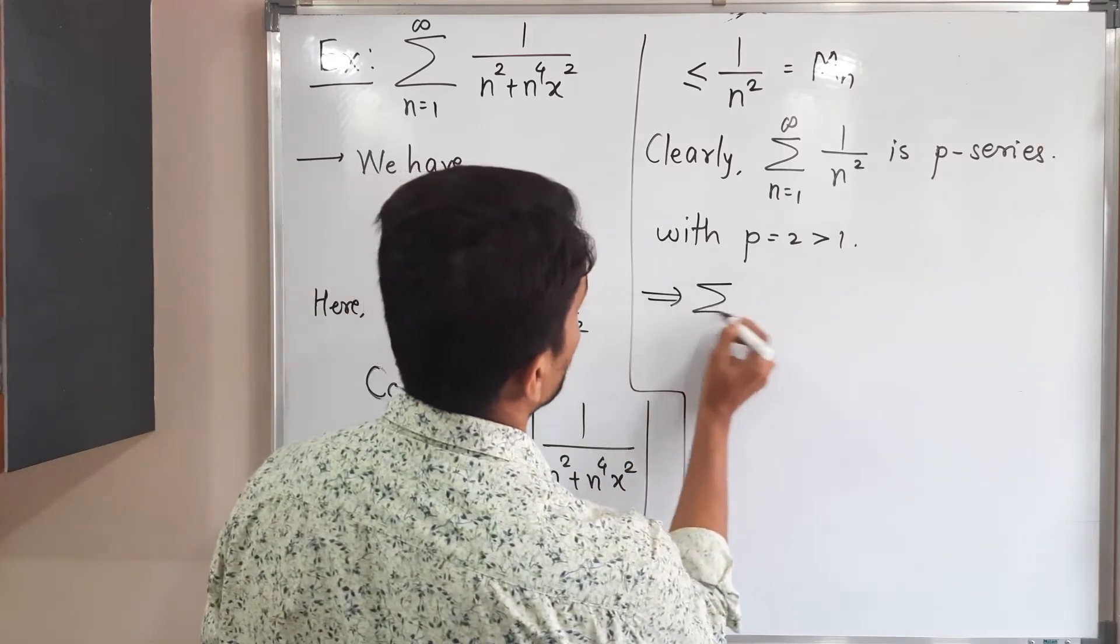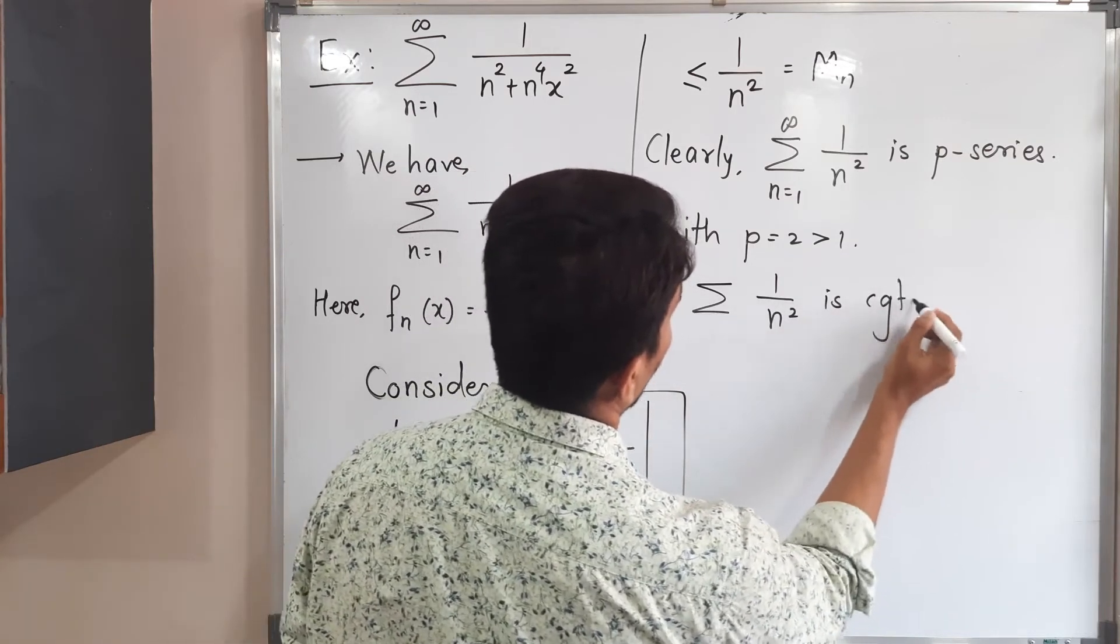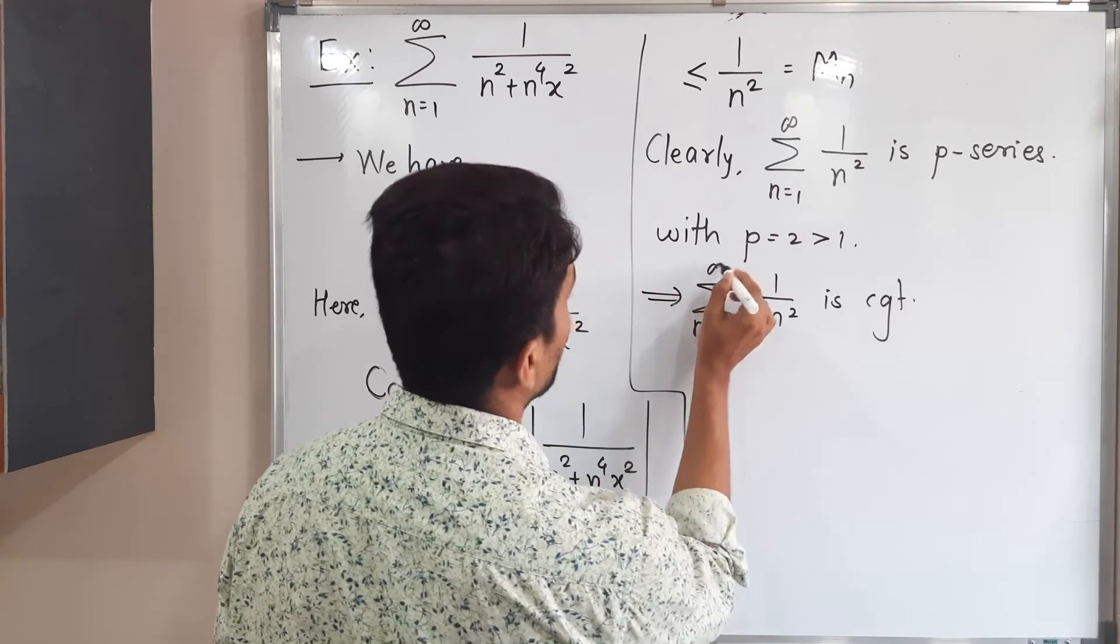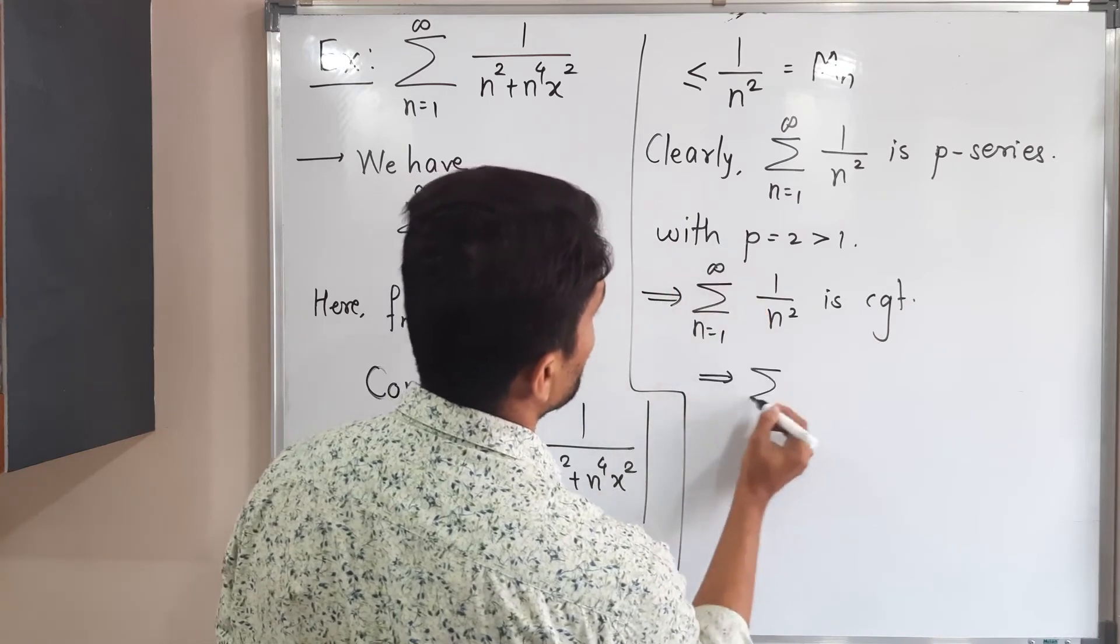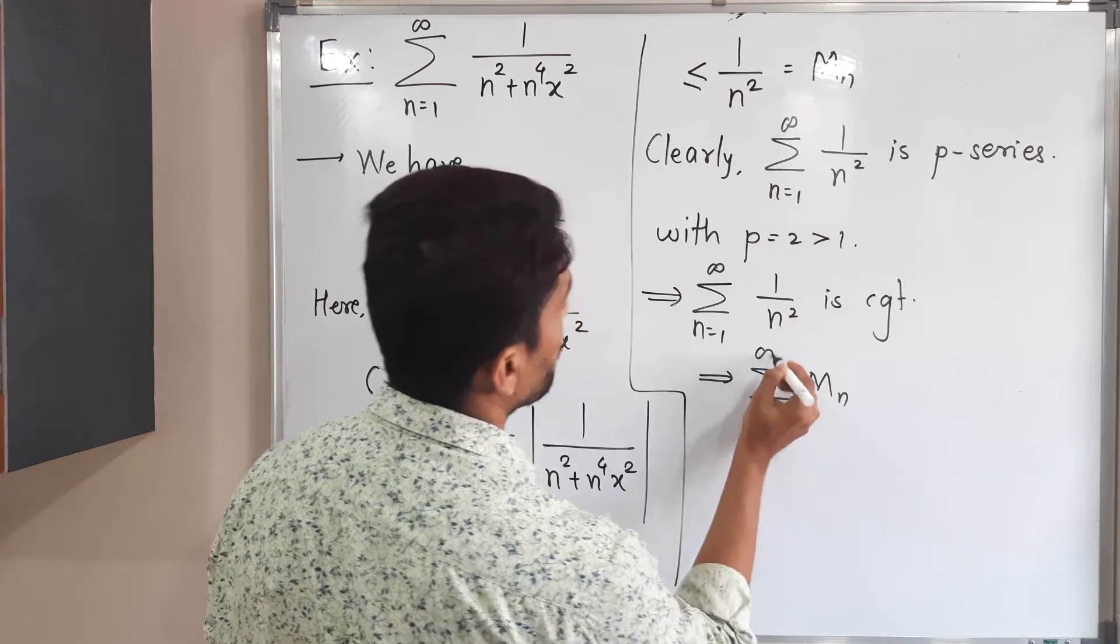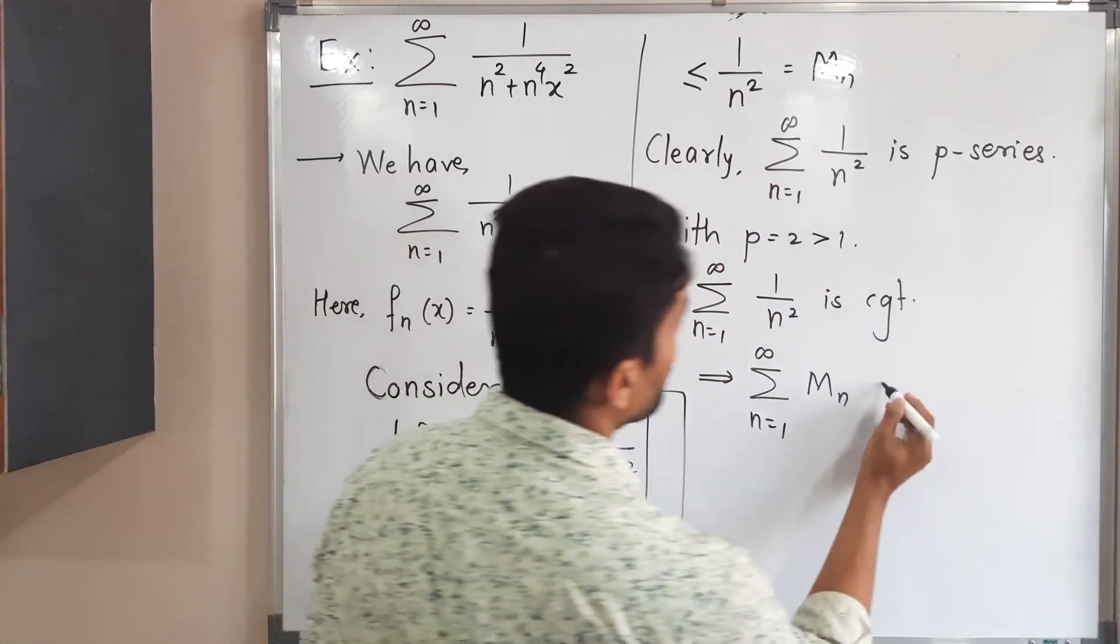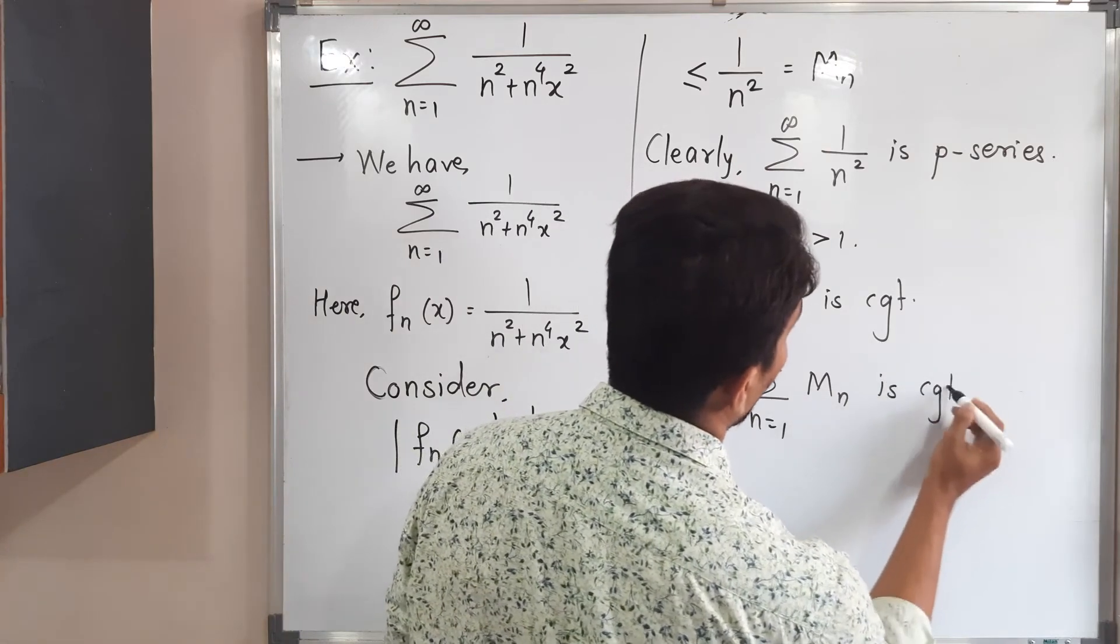So we can say therefore summation 1 upon n square is convergent, n running from 1 to infinity. So implies summation mn, n running from 1 to infinity since we have called it as mn, so this is also convergent.